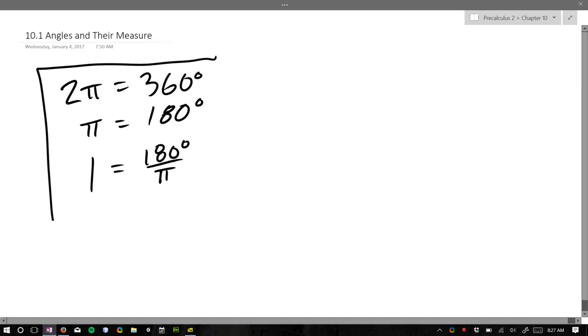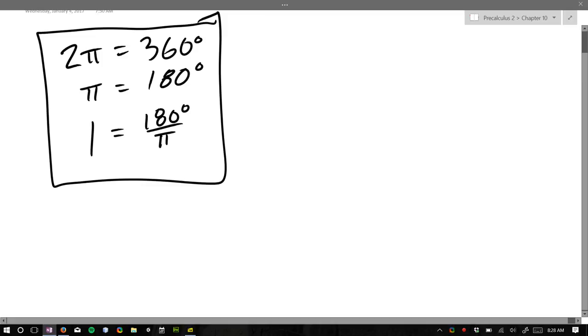All right, so these are the three that were useful yesterday, so I'll put a box around them. And then we're going to go ahead and start doing some conversions. Let's go negative 7 pi over 12 radians to degrees.